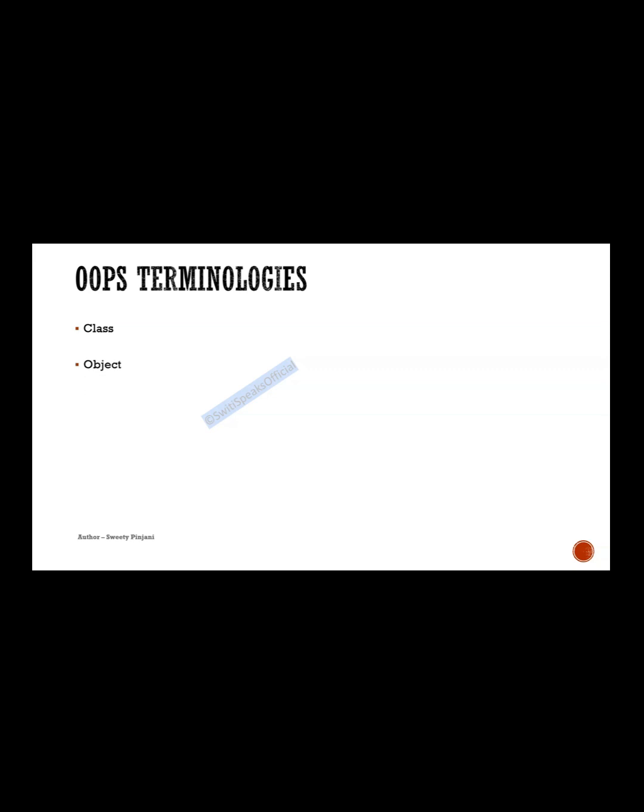The second OOPs terminology is object. Object is nothing but just an instance of that class. The third terminology is handle. You can consider handle as a pointer to an object. In simple words, you can think of handle as an address to your object — if you know the address, you can reach the object.